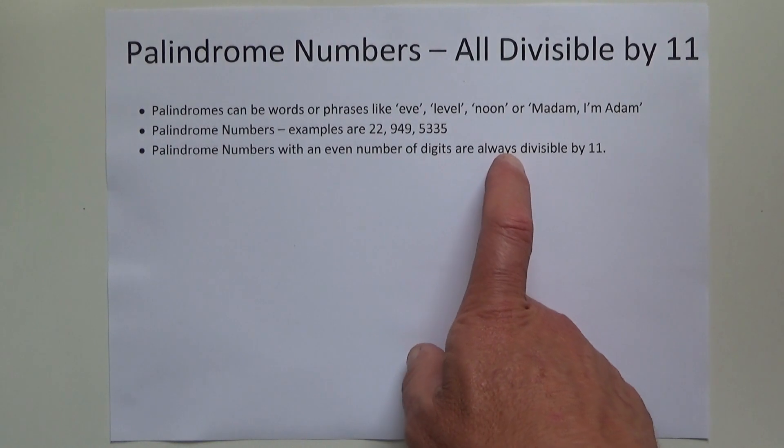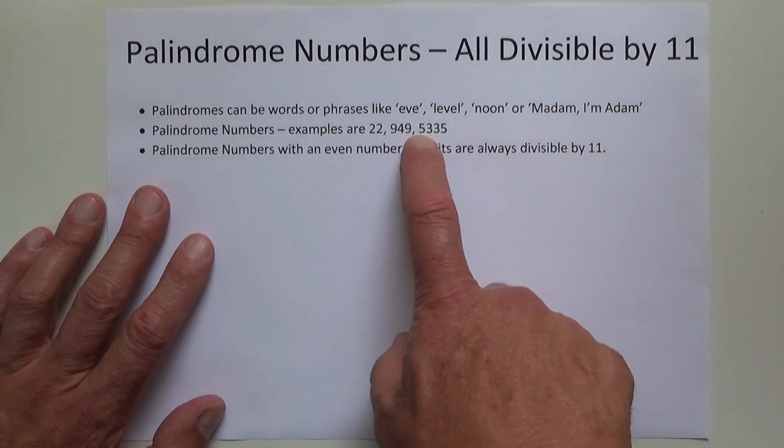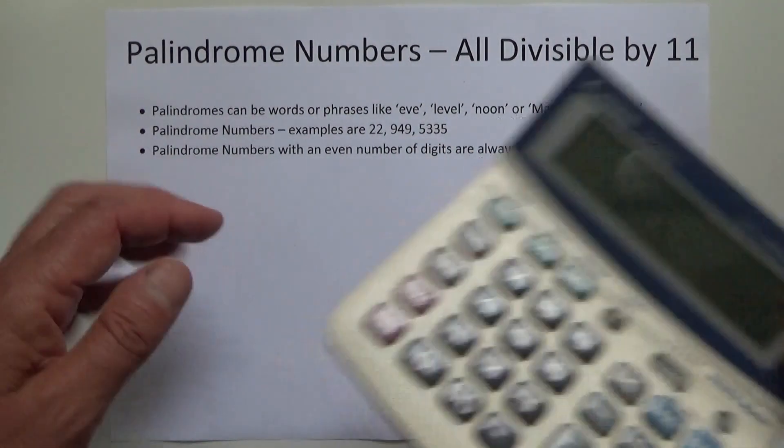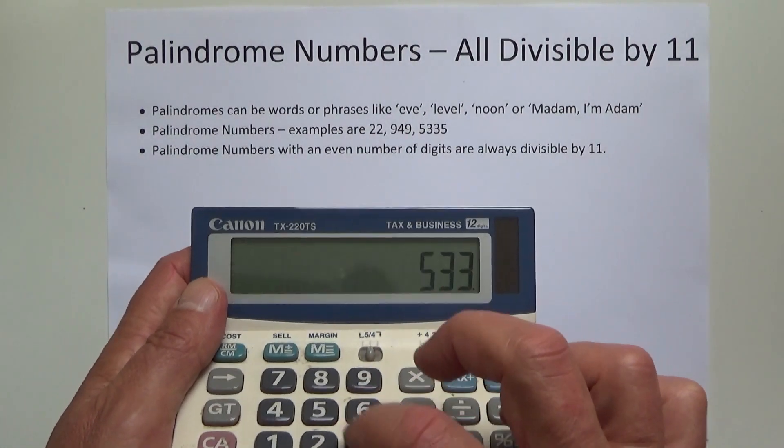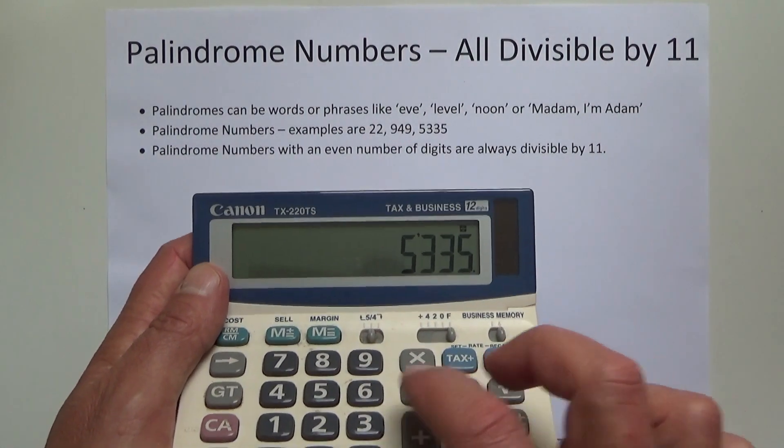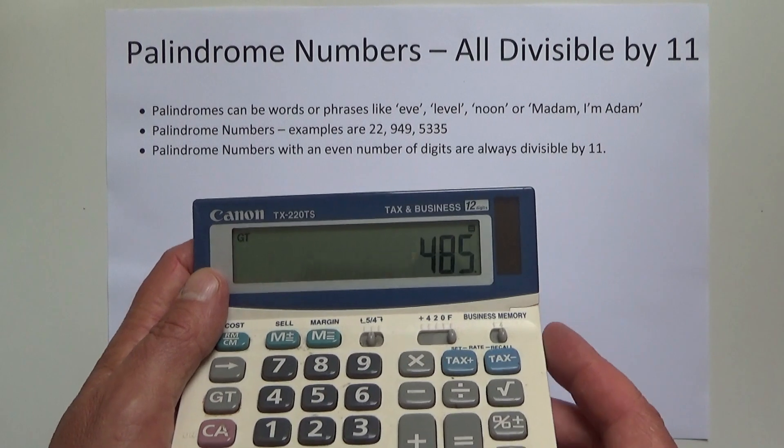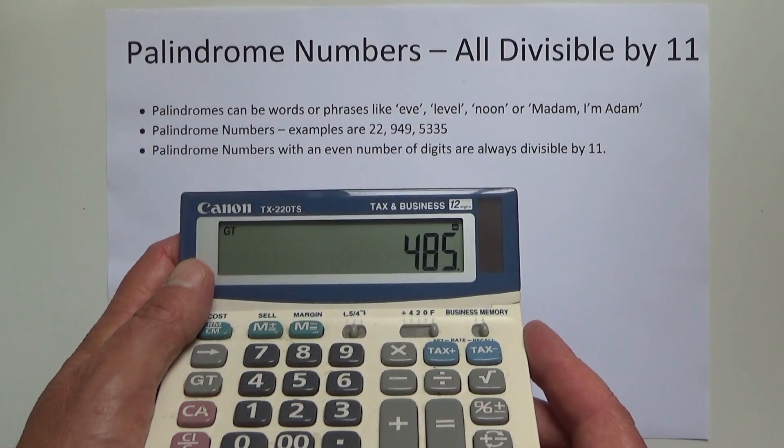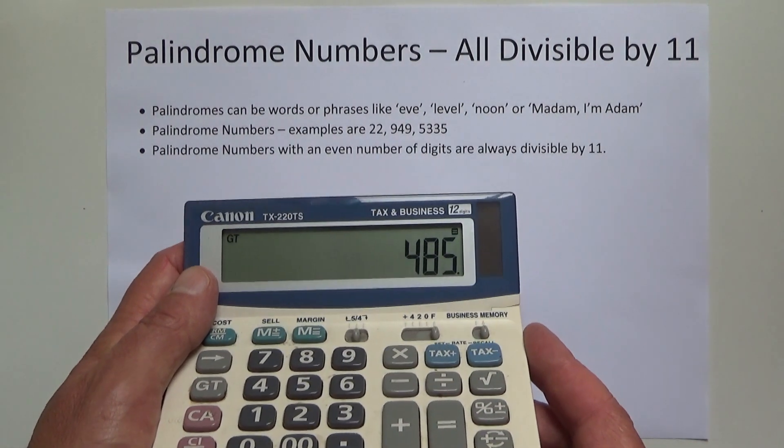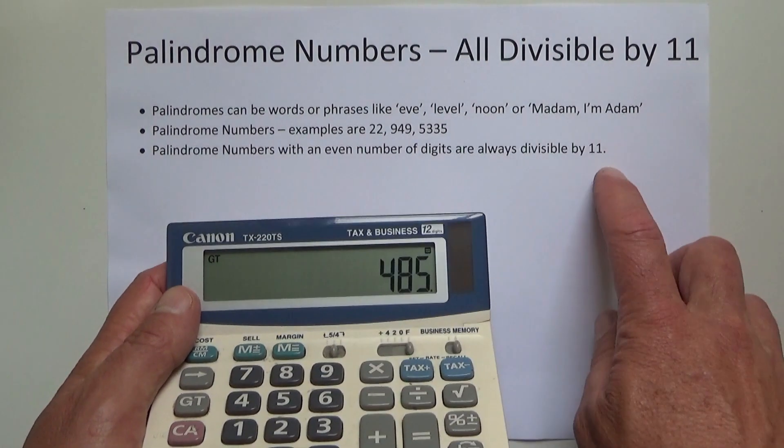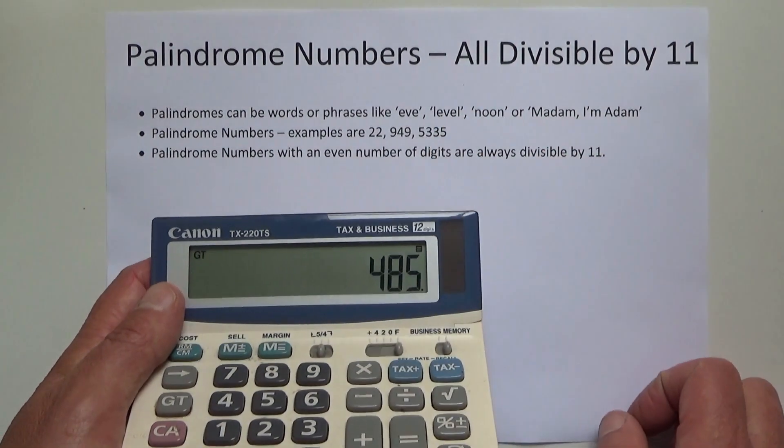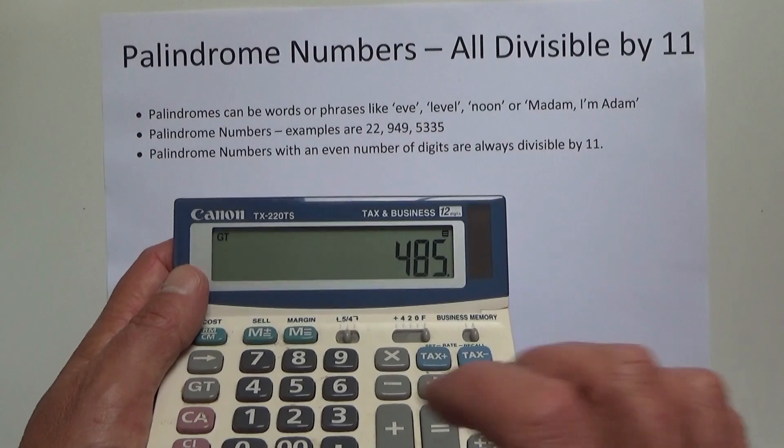If you would take 5335 and punch that into the calculator, divide by 11, then you end up with an even number of 485. So 485 times 11 equals 5335.